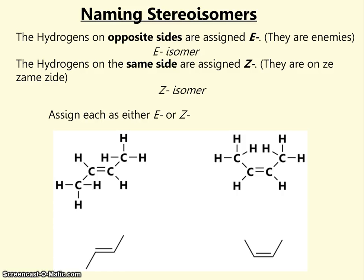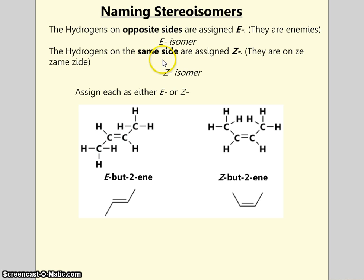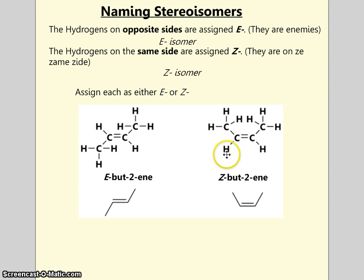Now your turn. Look at these two but-2-enes and assign both the displayed and skeletal structures as being either the E isomer or the Z isomer. The structures on the left-hand side are both E isomers — looking at the hydrogens, you can see they are enemies on opposite sides of the alkene. On the right, the hydrogens are together on the Z same side. It's a little more tricky with skeletal formulae because you cannot see where the hydrogens are explicitly, but their absence does indicate their position.